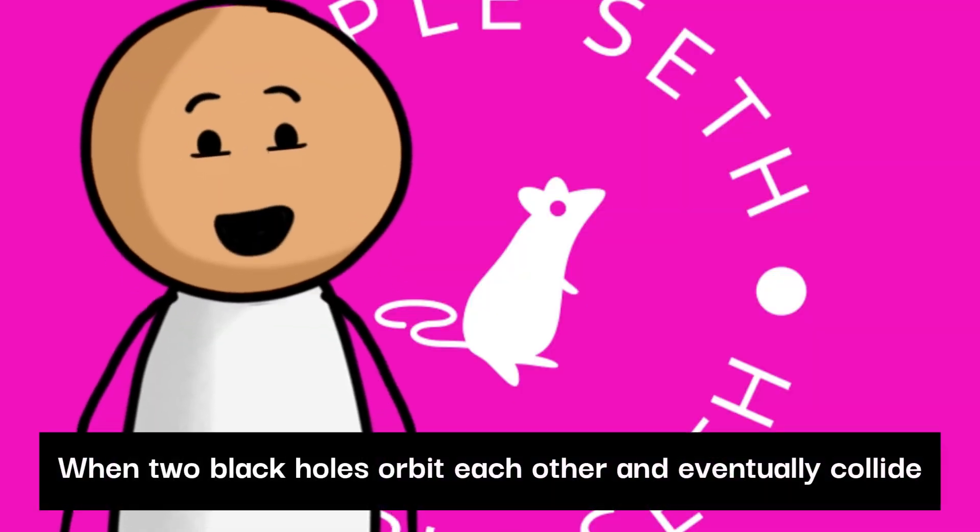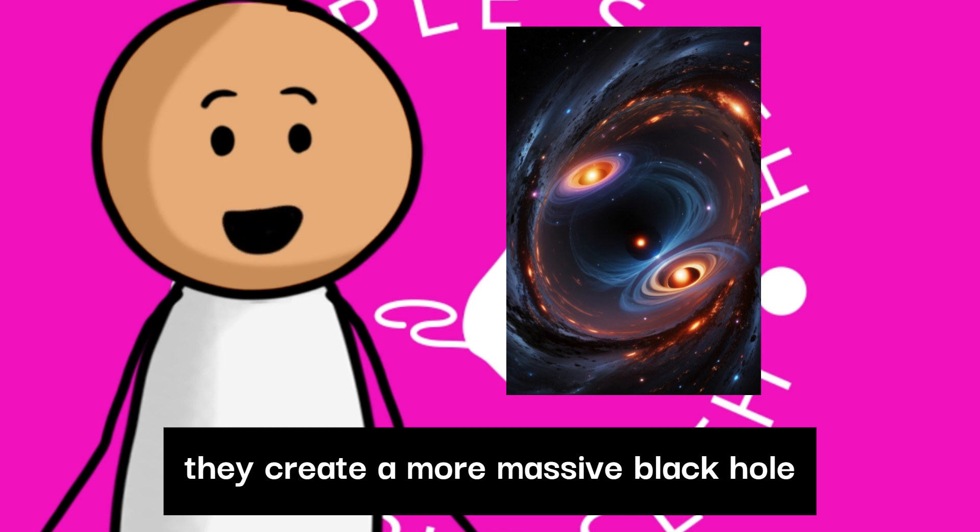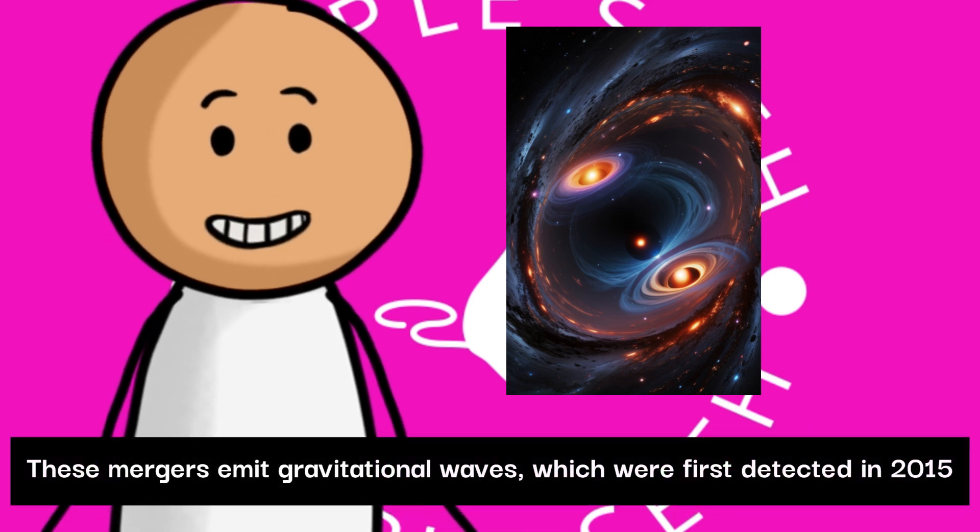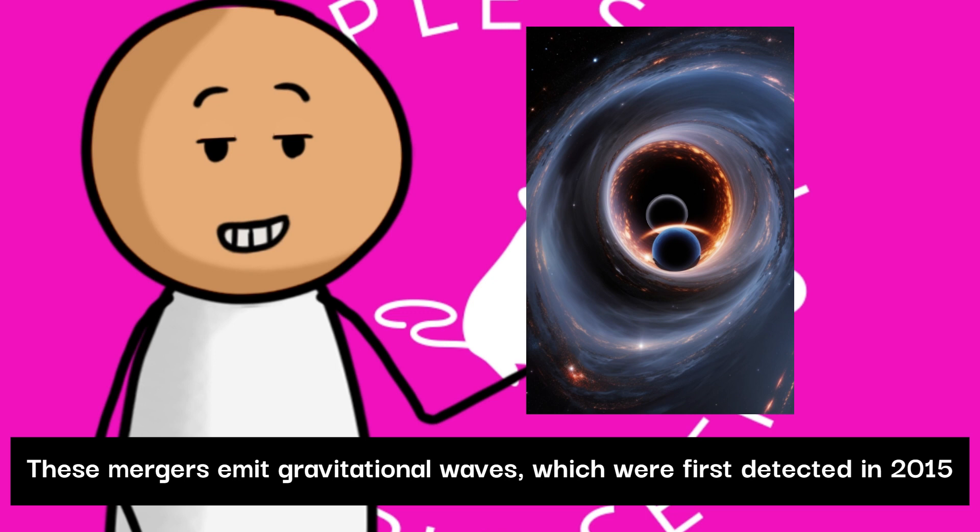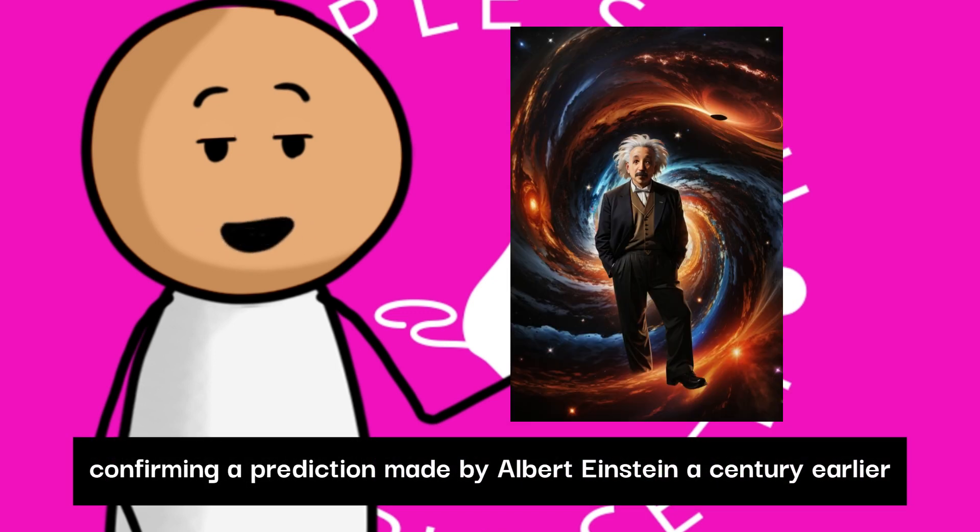When two black holes orbit each other and eventually collide, they create a more massive black hole. These mergers emit gravitational waves, which were first detected in 2015, confirming a prediction made by Albert Einstein a century earlier.